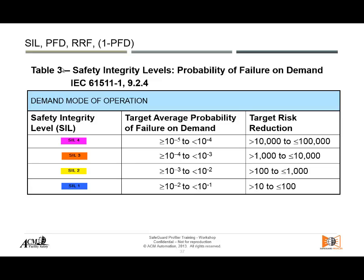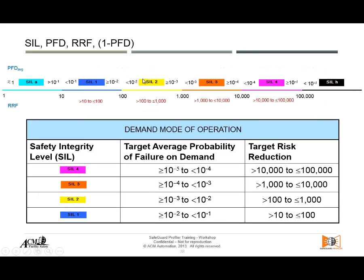SILs are ranges. For example, the SIL 1 range — as determined in the risk graph methodology — means I need to reduce risk by a certain amount, so my equipment must be at a certain performance level. For SIL 2, the probability of failure on demand is between 10⁻² and 10⁻³, including 10⁻³, and so on for SIL 3 and SIL 4.